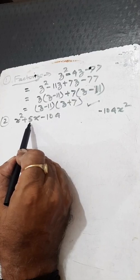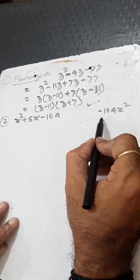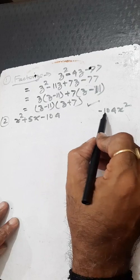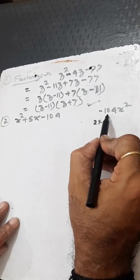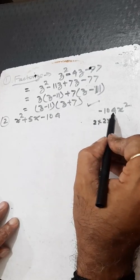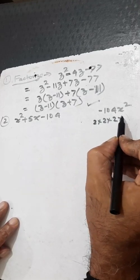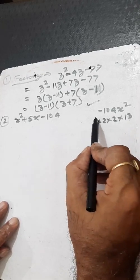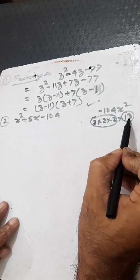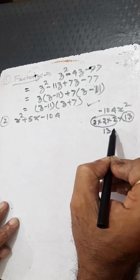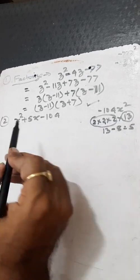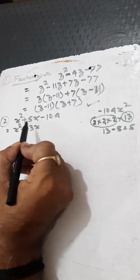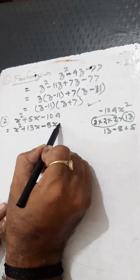So what do we have to write in place of 5x? We will factor the number. Add and subtract the number. We find: 2 into 13 gives us two parts, 13 and 8. Then 13 minus 8 equals 5. So we write: x squared plus 13x minus 8x minus 104.